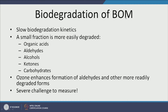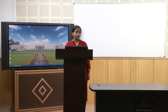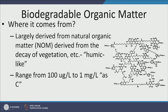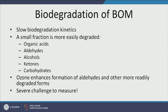Biodegradable organic matter typically has very complex, often aromatic structures — benzene-like or naphthalene-like rings — that are very stable and resistant to microbial degradation. Whatever could degrade easily has already degraded, leaving very slowly degrading biodegradable organic matter. The kinetics of degradation are very slow, though a certain fraction degrades quickly. To enhance the speed of degradation of the slowly degrading fraction, one of the most successful techniques is ozonation.